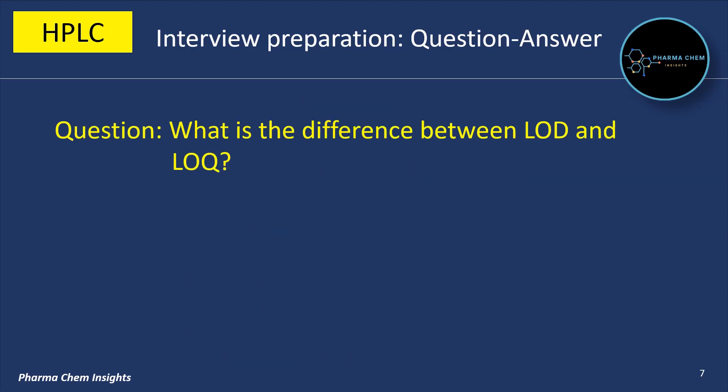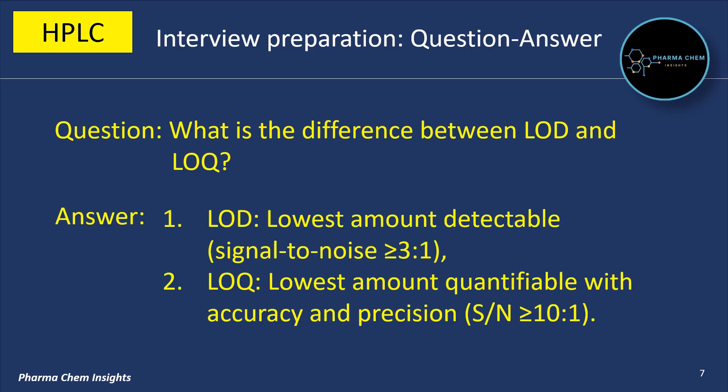Next question: what is the difference between LOD and LOQ? LOD is the lowest amount detectable, where the signal-to-noise ratio should be greater than or equal to 3:1.